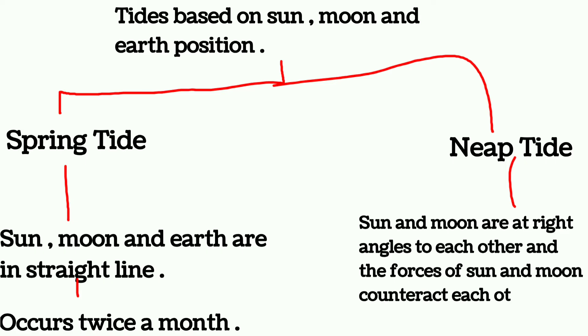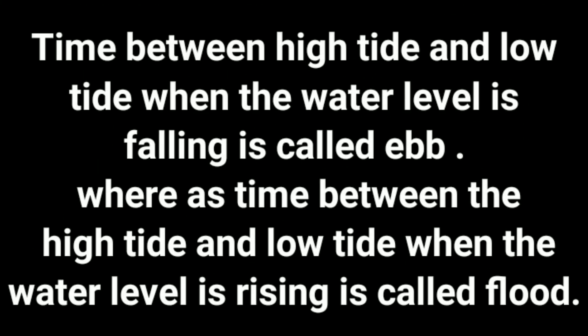We also have tides called ebb tide and flood tide. The time between high tide and low tide when the water level is falling is called the ebb tide, whereas the time between the high tide and the low tide when the water level is rising is called the flood tide.